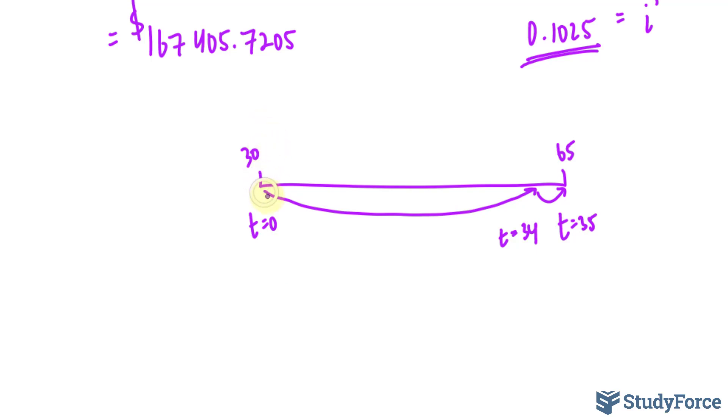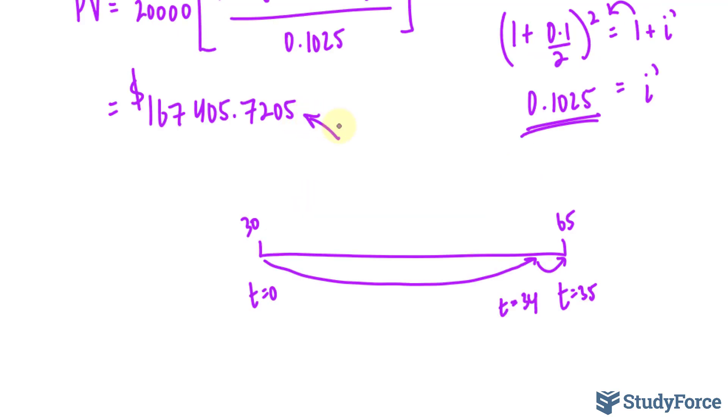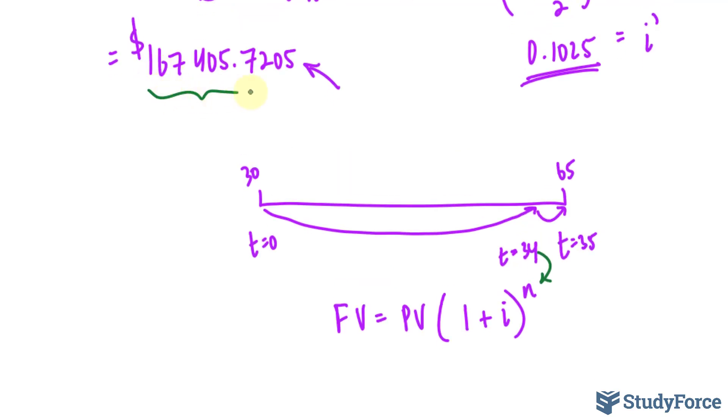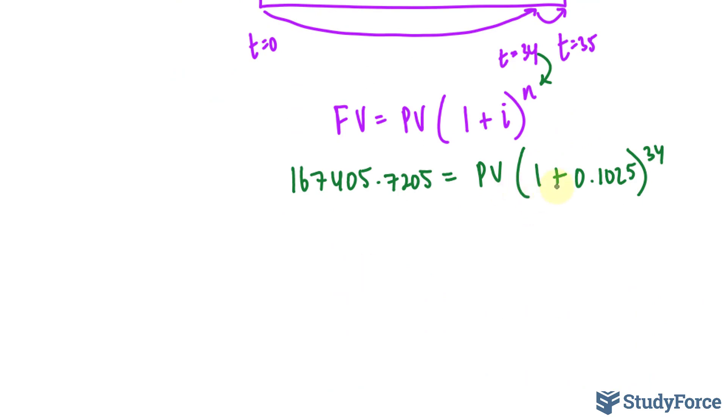That being said, how do we find that amount today that will have to mature to this amount before she can purchase the annuity? We use the future value formula. Future value is equal to the present value times 1 plus the interest rate raised to the power of n, which represents the number of periods. And we just distinguished that it is 34. The future value, we know it has to mature to that amount. So I'll write down 167405 decimal 7205 is equal to the present value that we're seeking multiplied to 1 plus 0.1025 raised to the power of 34. Here we apply a little bit of algebra. We can evaluate that first, but what I choose to do is I divide both sides by that expression and then perform everything on my calculator at once.